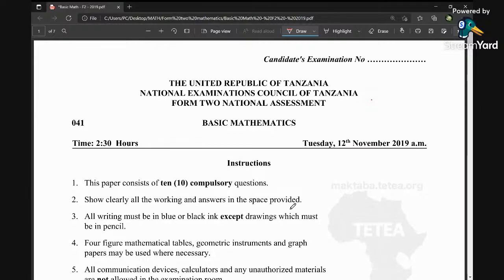It started by giving you instructions. The duration for the exam is two and a half hours, and the paper has 10 compulsory questions, so you're supposed to do all the questions. Show clearly all the working and answers in the space provided. All writing must be in blue or black ink except the drawings which must be in pencil.